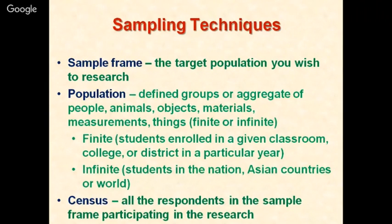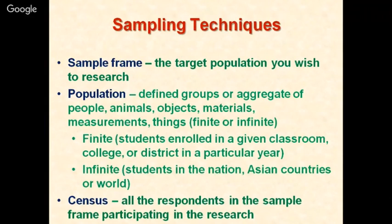The second key term is population, which refers to the defined groups or aggregate of people, animals, objects, materials, or measurements. The population can be finite or infinite. For example, studying the attitude of technical teachers in the state of Punjab gives a finite population — all technical teachers working in engineering colleges and polytechnics. When the study is not geographically restricted, the target population becomes infinite.